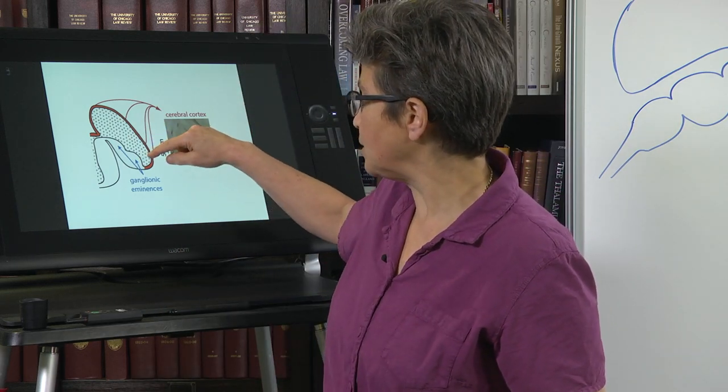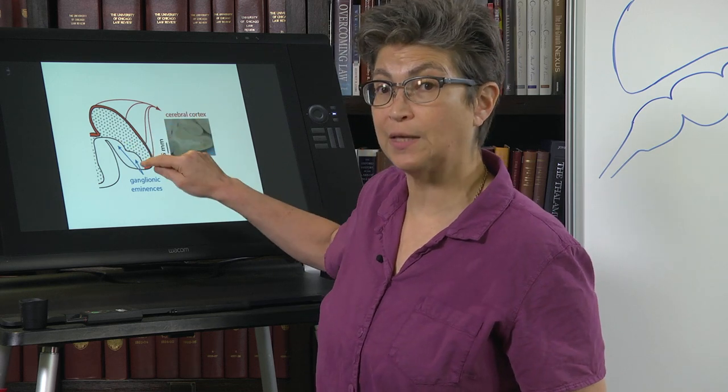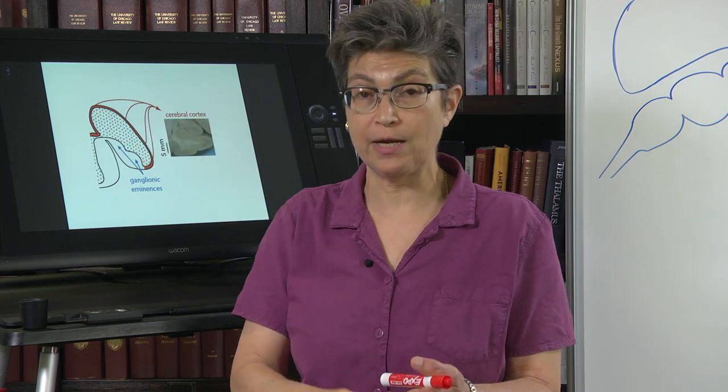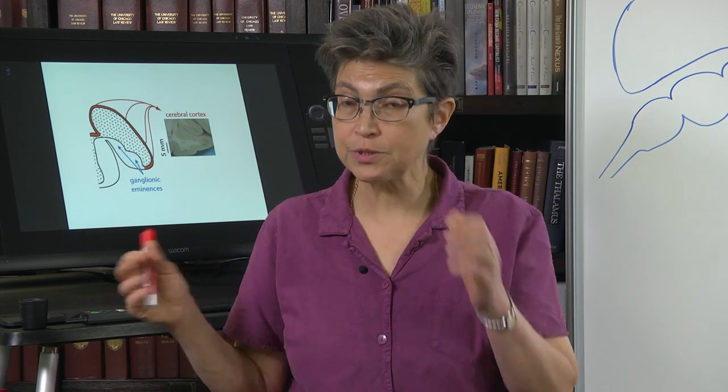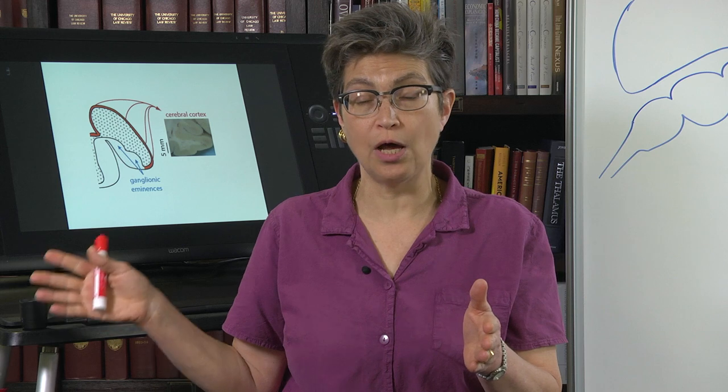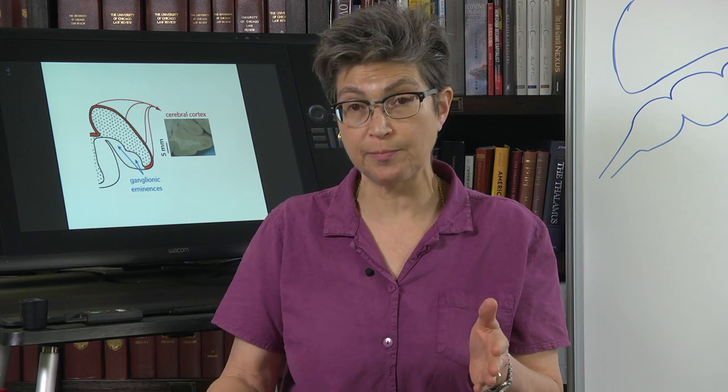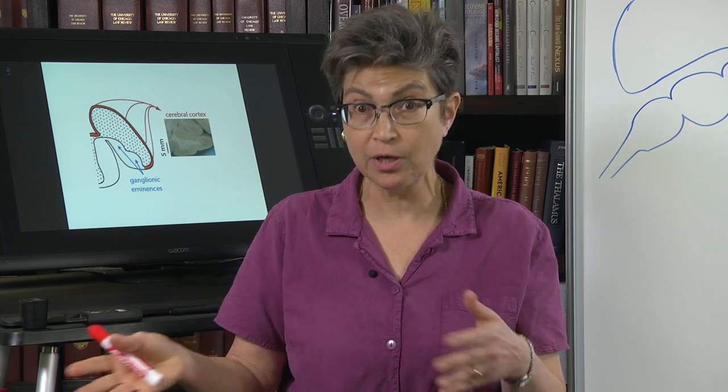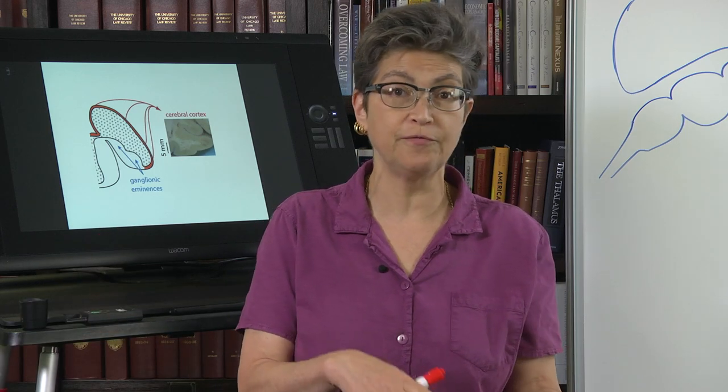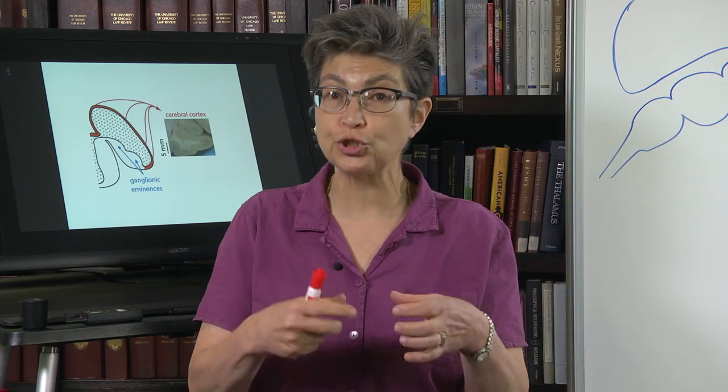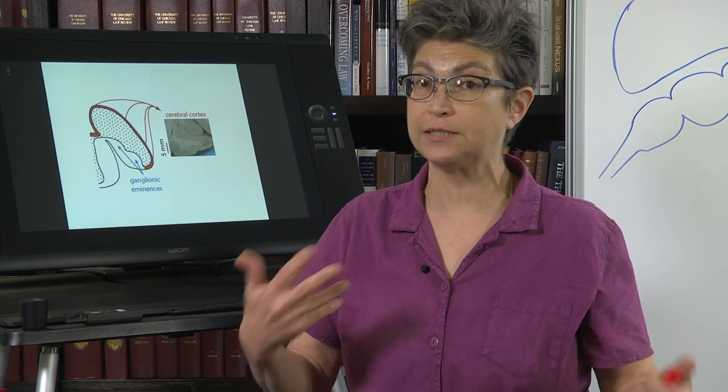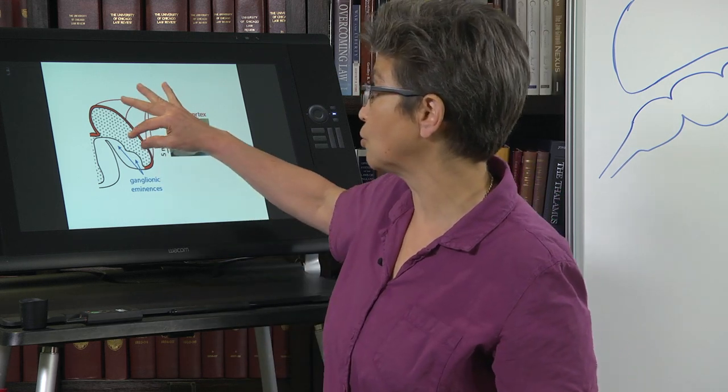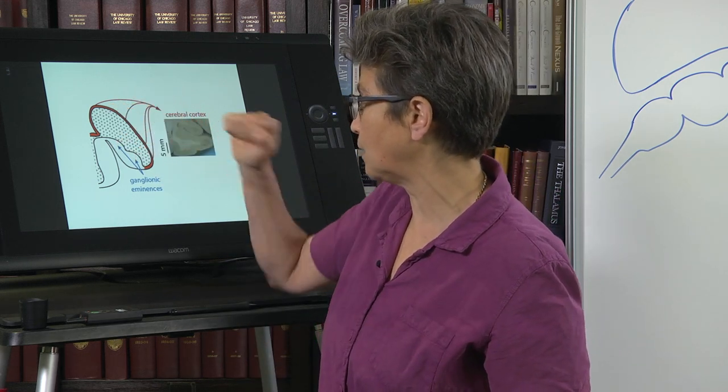So the core structures that derive from the ganglionic eminences are the striatum and the globus pallidus or pallidum. In modern terms, we now call other components such as the subthalamus and the substantia nigra part of the basal ganglia. But the core structures that we share with the hagfish and the crocodile, those are the striatum and pallidum that come from the ganglionic eminences.